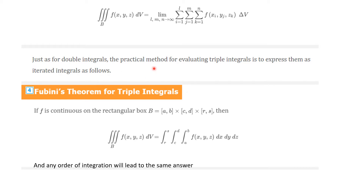The practical method for evaluating triple integrals of this form is to express them as iterated integrals. For a box with bounds a to b, c to d, r to s, the triple integral over the box B of f(x, y, z) dV equals an iterated integral. You integrate first with respect to x, then with respect to y, then with respect to z. Fubini's theorem tells us that any order of integration will lead to the same answer — sometimes you're compelled to change the order, sometimes it's convenient, and sometimes it's arbitrary. Fubini's theorem holds for triple integrals and in fact for n-dimensional integrals as well.